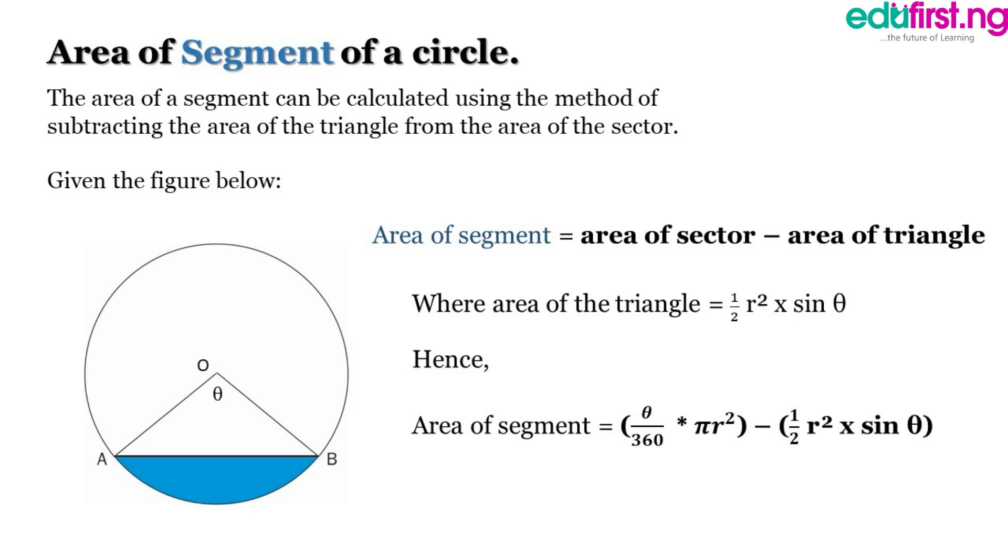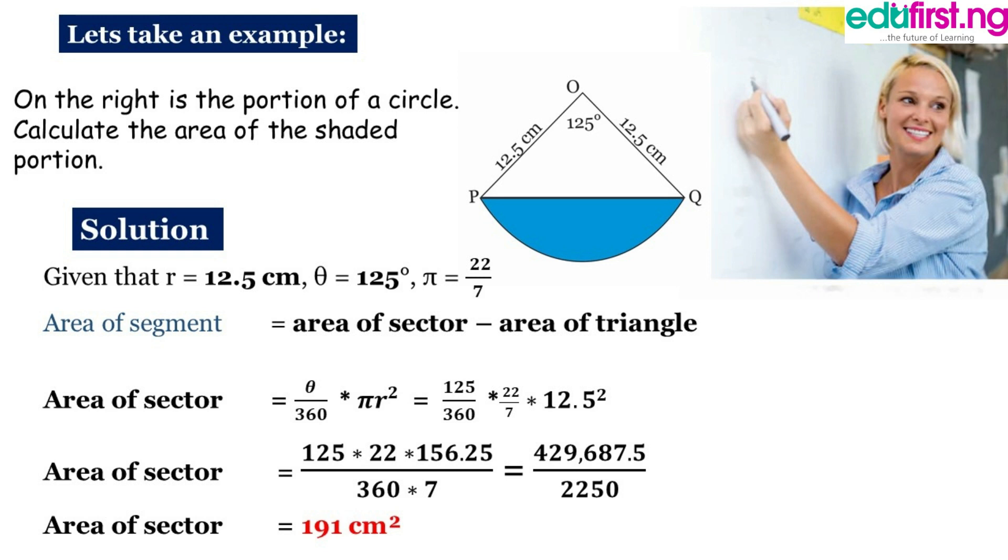So let's get quickly to an example so that we trace the point. On the right is a portion of a circle, calculate the area of the shaded portion. So we have a figure on the right hand side where the radius is 12.5 cm and the angle it subtends at the center is 125 degrees. So we calculate the area of the shaded portion blue. Given that r is 12.5 cm and theta is 125 degrees, pi equals 22 over 7.